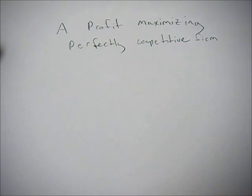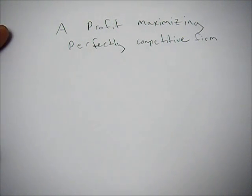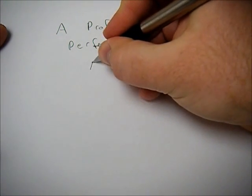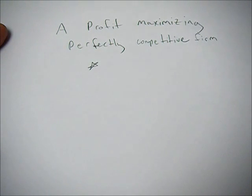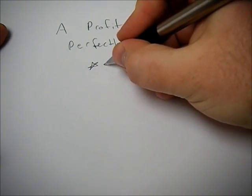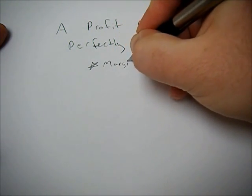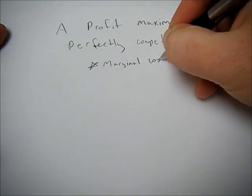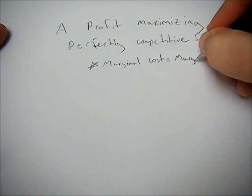This video is going to go over what the graph looks like for a profit maximizing perfectly competitive firm. And if there's one thing I can stress, it's that a profit maximizing firm in any respect is going to maximize where marginal cost equals marginal revenue.